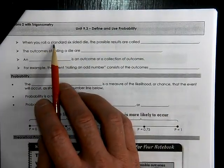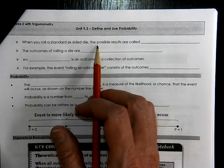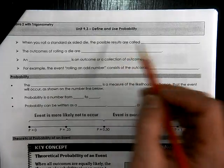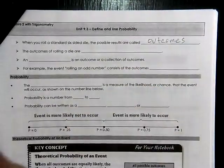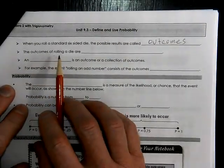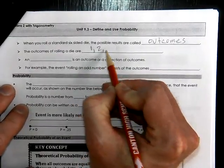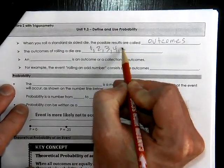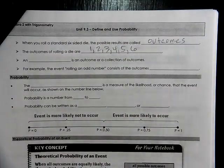When you roll a six-sided die, the possible outcomes or the possible results are called outcomes. The outcomes of rolling a die would be one, two, three, four, five, or six. Those are considered your outcomes. We're working on some vocab words.